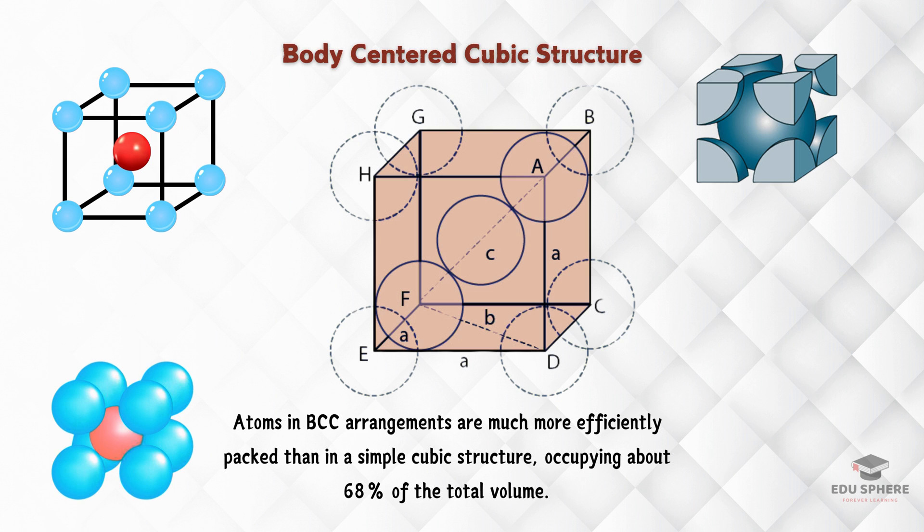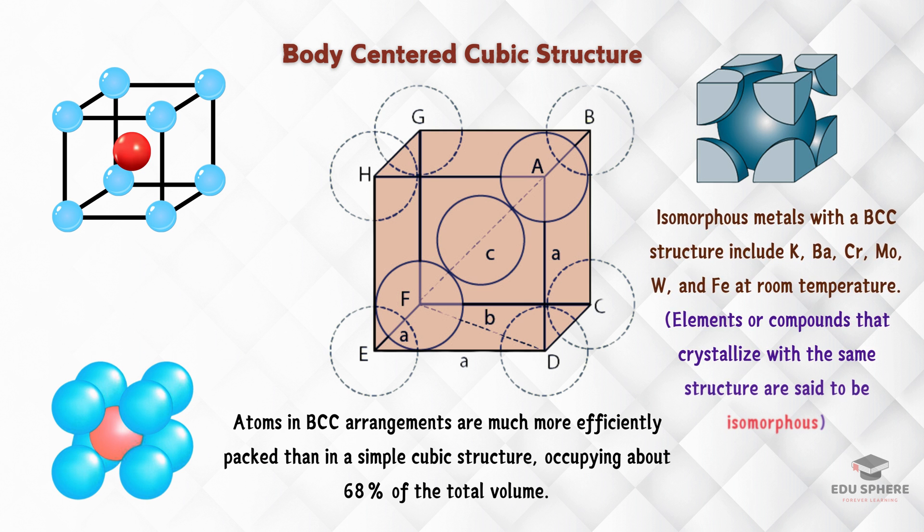This efficient packing makes body-centered cubic a popular choice for some tough metals. Elements like potassium, barium, chromium, molybdenum, tungsten, and even iron all crystallize in this body-centered cubic structure.